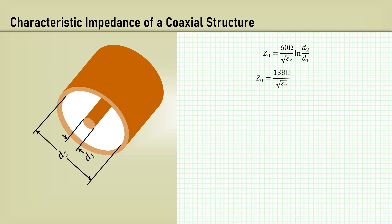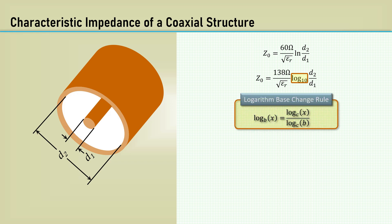Sometimes you will see the characteristic impedance formulas with the log base 10 of the ratio of diameters. That can be resolved using the logarithm base change rule. You basically divide the log base C of X divided by the log base C of the desired base number. In this case, the log base 10 of E, which is 0.434. This gives us 138.155.